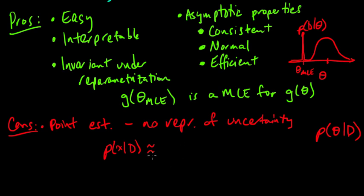And then you would put a point mass there, and you could approximate this predictive distribution by the probability of x given theta MLE. But this is an approximation, that's the point.